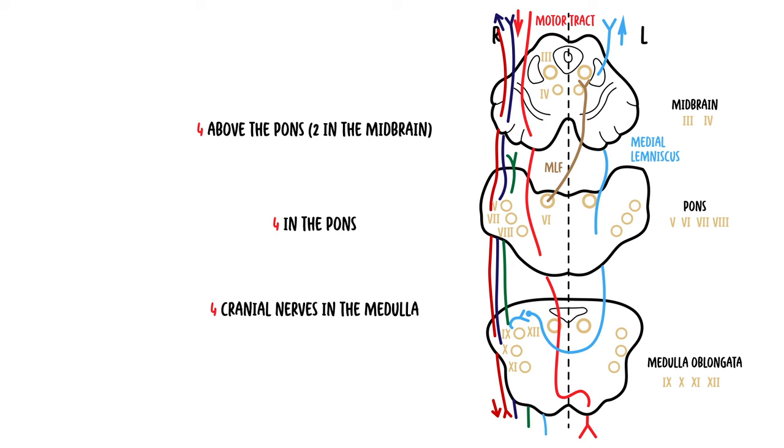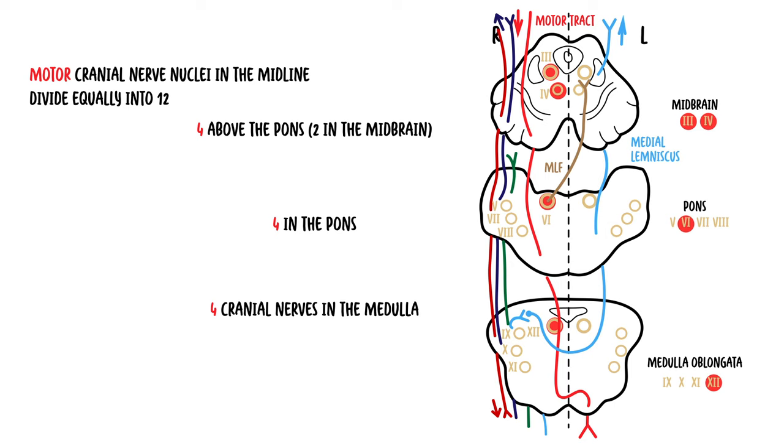The last rule of rules of four is that the four motor cranial nerve nuclei that are in the midline are those that divide equally into 12, except one and two. So the four motor cranial nerves are 3, 4, 6, and 12. Cranial nerve 5, 7, 9, and 11 are in the lateral brainstem. So again, medially, midline, these are your motor nerve nuclei.